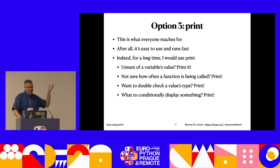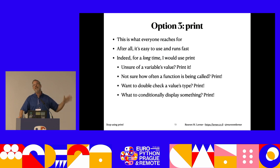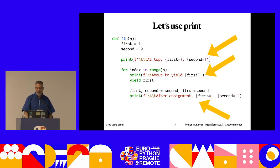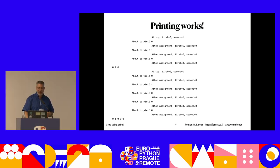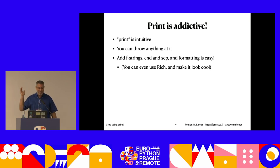If I don't know a variable's value, I'll print it. If I don't know when a function is being called, I'll print it. If I want to double check a value's type, I'll print it. If I want to conditionally display something, I'll print it. F-strings are especially useful for this - you can stick all sorts of things in there, and the new f-string syntax with the equals sign before the closing curly brace was designed for people like me who like using print.